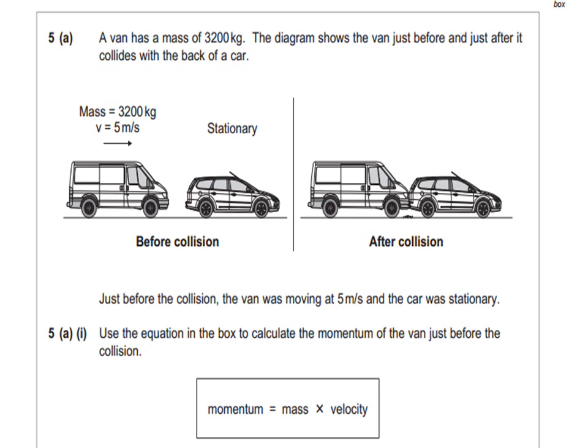Just before the collision, the van was moving at 5 meters per second and the car was stationary. Use the equation in the box to calculate the momentum of the van just before the collision. The word equation is that momentum equals mass times velocity.